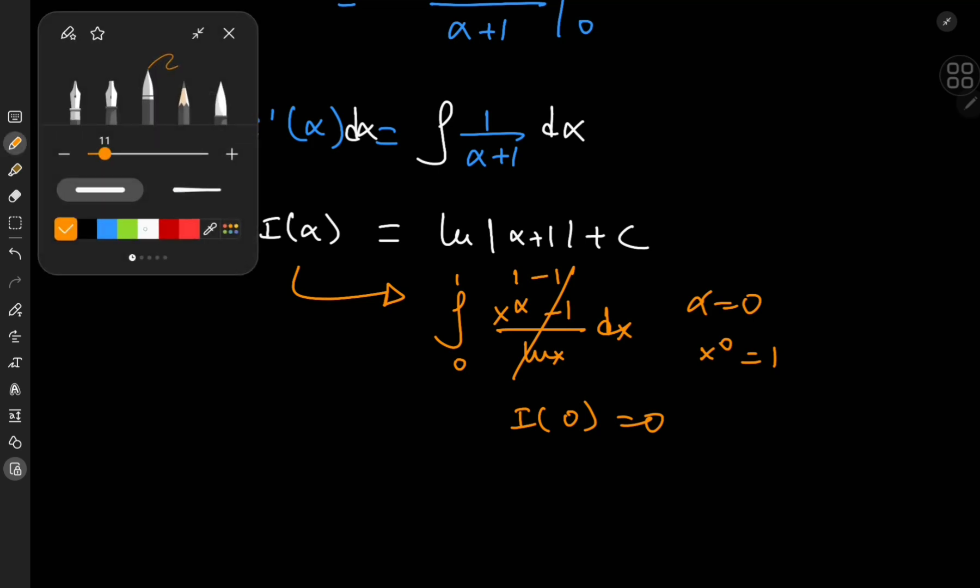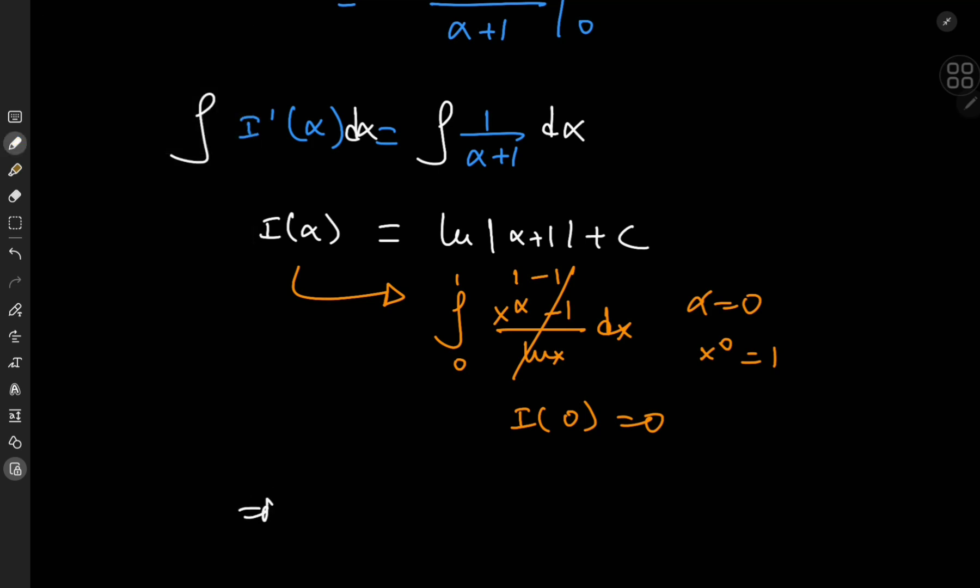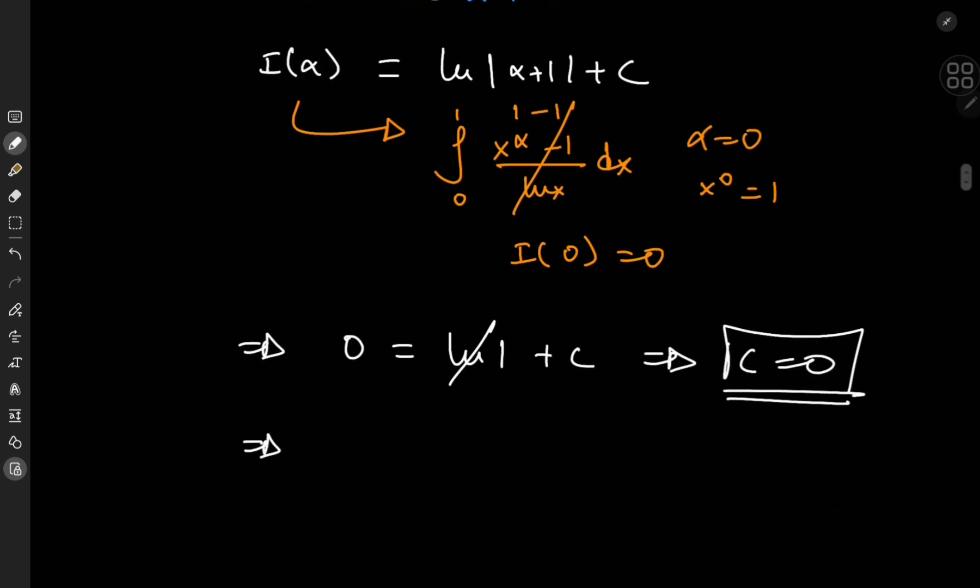So using this information, I can write on the left hand side, I have i of 0, which is 0. On the right, I have log 0 minus 1, which is 1 plus c. And since log 1 is 0, that means that c is conveniently equal to 0. So this implies that i of alpha is the logarithm of alpha plus 1.